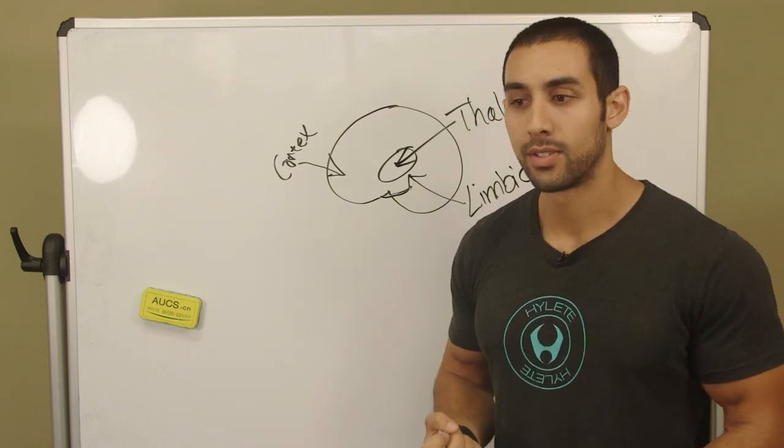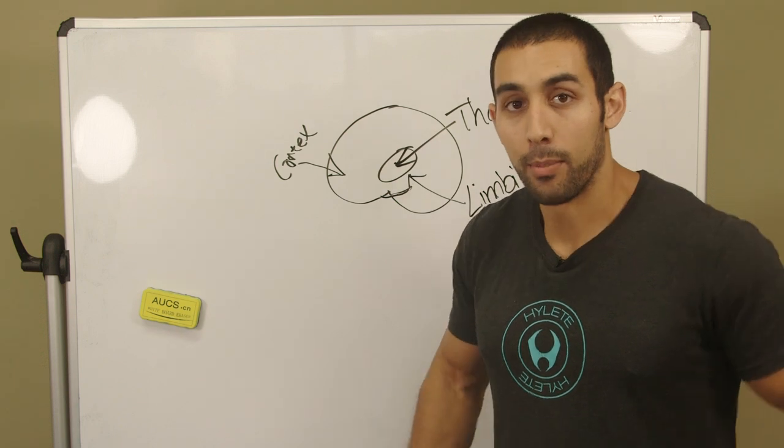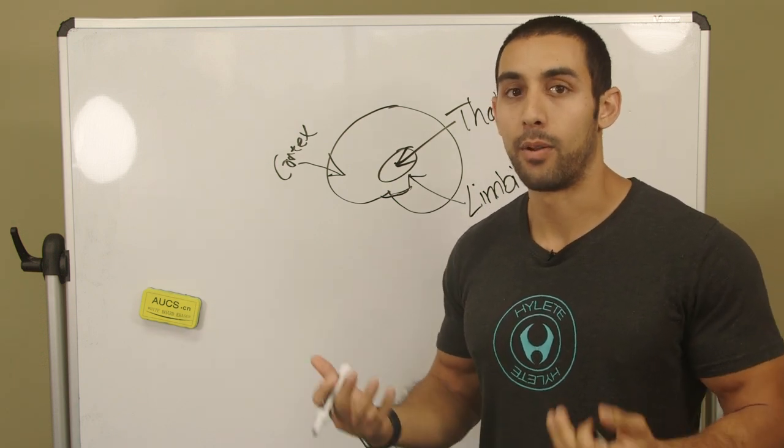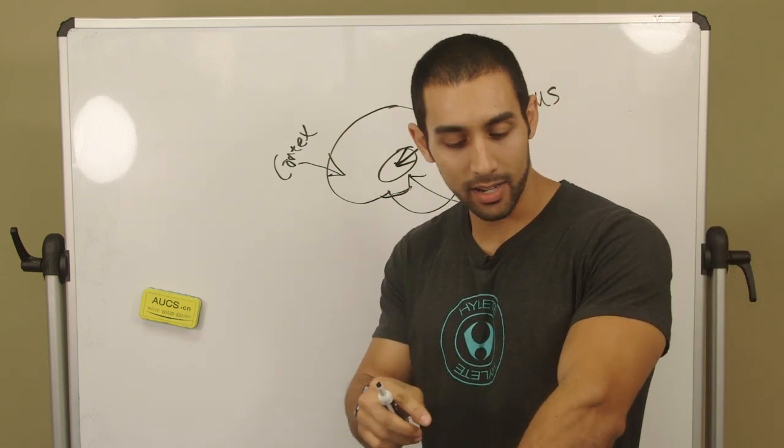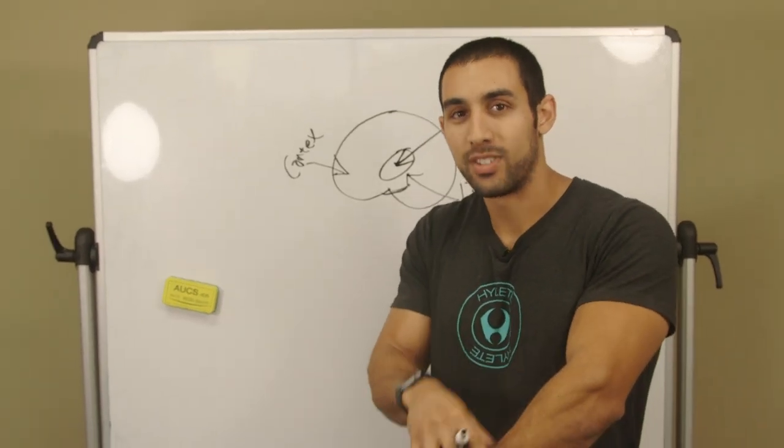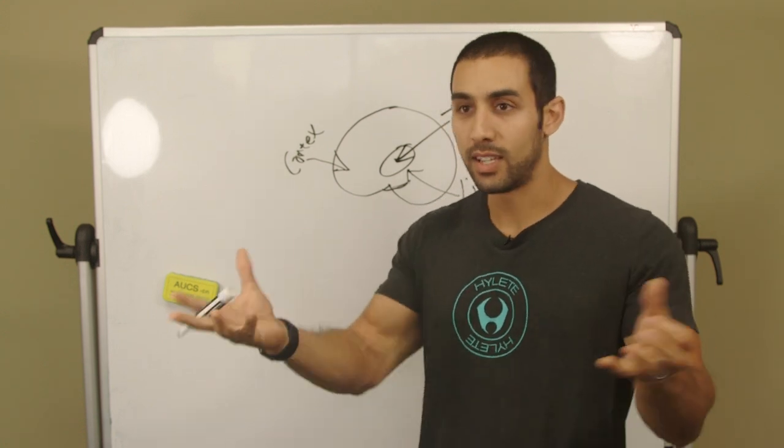If that's happening, that's because you're triggering a response through the limbic system, so that's the emotional part of the brain. Now what I want to talk about are the different types of signals that are sent to the brain from the site of injury, from the body to the brain.